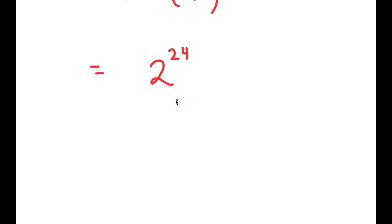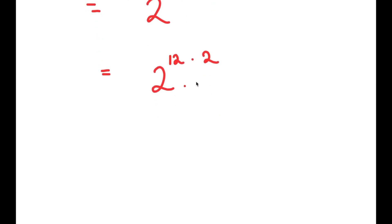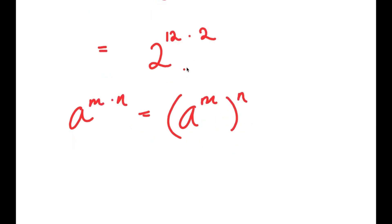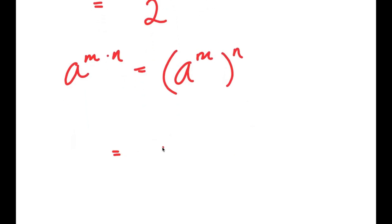From here I'm going to rewrite 2^24 as 2^(12 times 2). I can use the property a^(m·n) = (a^m)^n, so 2^(12×2) is equal to (2^12)^2.